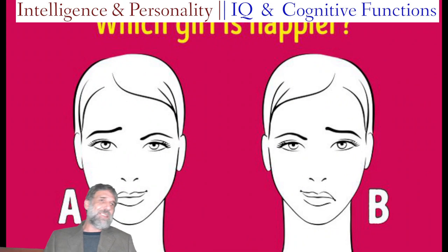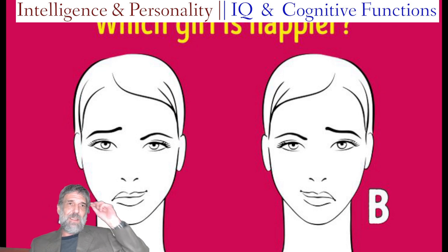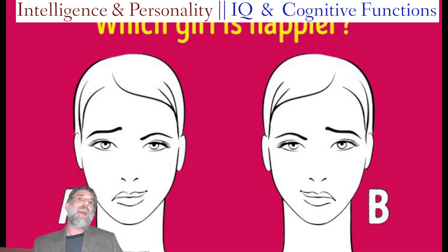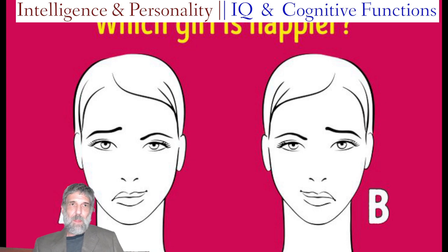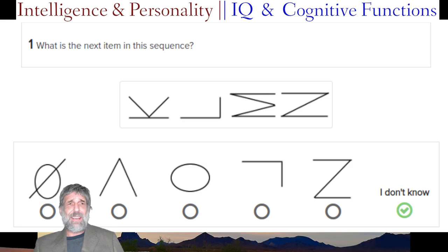Here's an interesting question: which is happier, A or B? I got this image because it's just mirrored — they're the same expression, just mirrored — but this one looks happier to me because her right side looks happier. And what's the next item in this sequence? I don't know — I have no idea. I hate these kinds of questions. I do terribly on them.